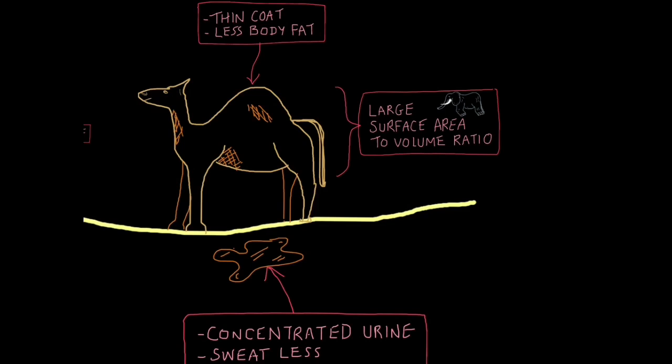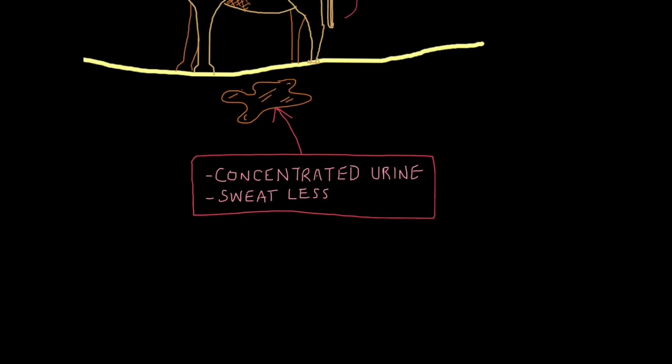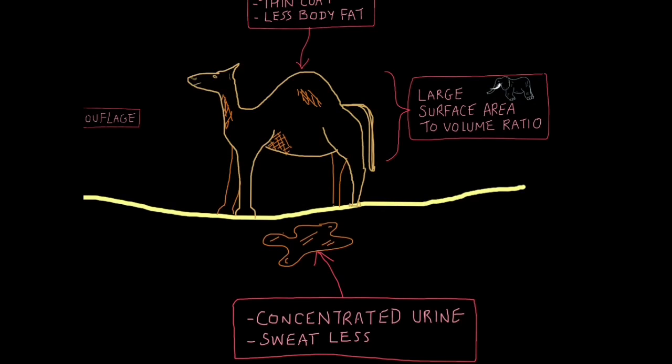Secondly, it doesn't help a desert animal if it's very fatty which would insulate a lot of body heat. Camels do have a lot of fat but they store it in one place which is their hump. This is basically so in times of food shortage they can metabolize that fat and use it for energy. They also have a thin coat to allow heat to escape very quickly. So less insulation due to less body fat and a thin coat. Camels also conserve water by producing dark concentrated urine and they also sweat less. In addition to this, camels have long legs to keep their belly away from the baking sand. And they have two eyelids, one which is see-through and one which is normal. This means during a sandstorm they can close the see-through eyelid and protect their eyes from damage from the sand.